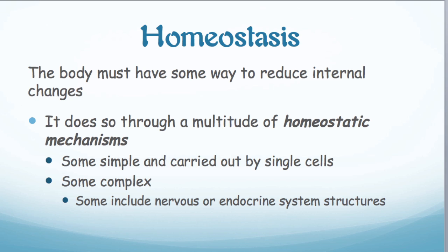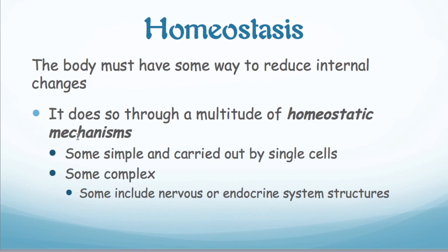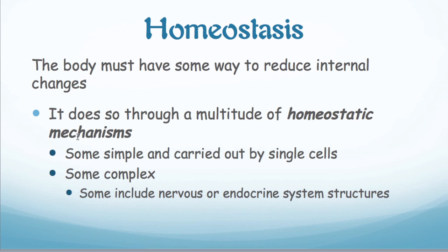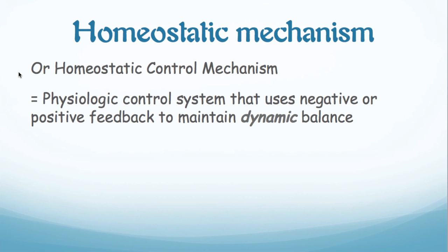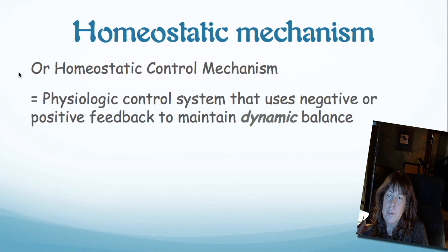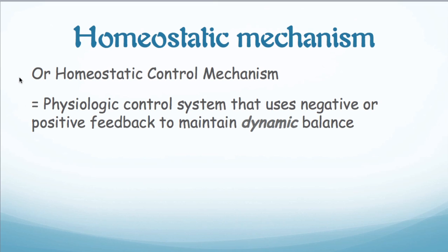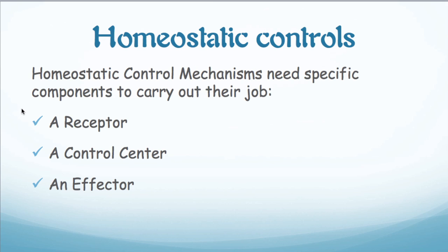So we do have ways to balance — to reduce the internal changes. We do this with homeostatic mechanisms, and we have a whole ton of different ones in the body. Some are very simple, carried out by a single cell type; others are complex and involve systems, perhaps endocrine or nervous systems, which are the control systems in our body. A homeostatic mechanism — also called a homeostatic control mechanism — is a physiologic control system that uses negative feedback or positive feedback to maintain a dynamic balance, meaning it doesn't stay exactly the same; things shift a little, but these mechanisms don't allow the shifts to go too far.